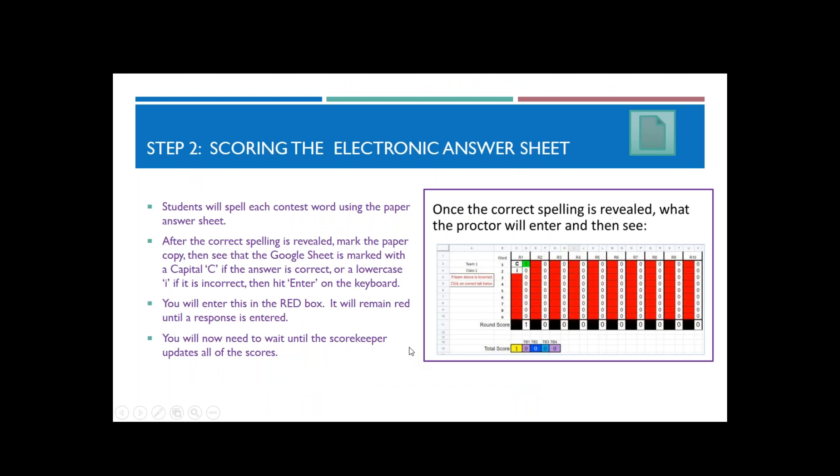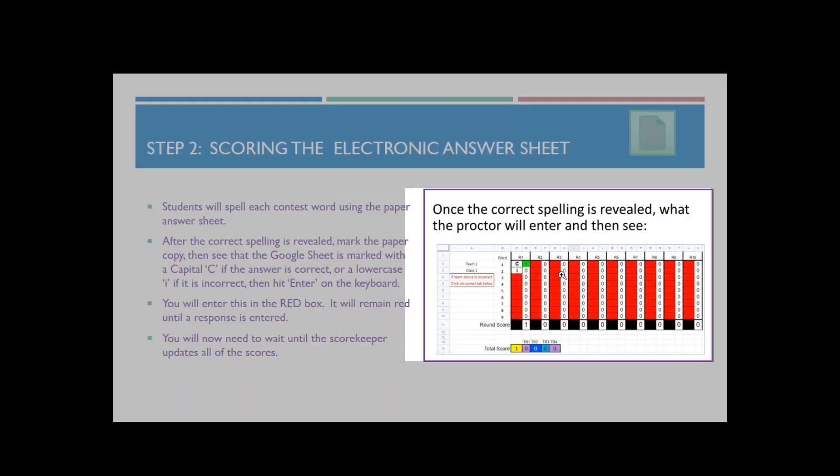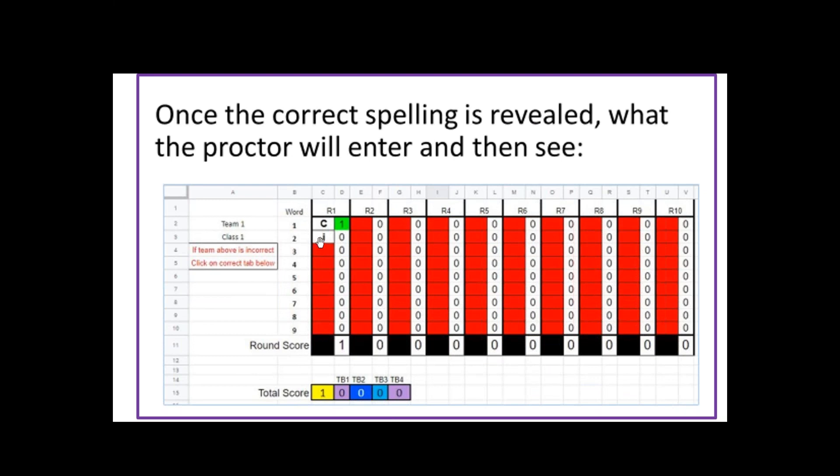Once that is done for each word. So after each word that they spell, not after the round, but after each word that they spell, you will enter into the system whether they got it right or wrong. In the red box, you will enter the score. You'll do a capital C if the answer is correct and a lowercase i if the answer is incorrect.